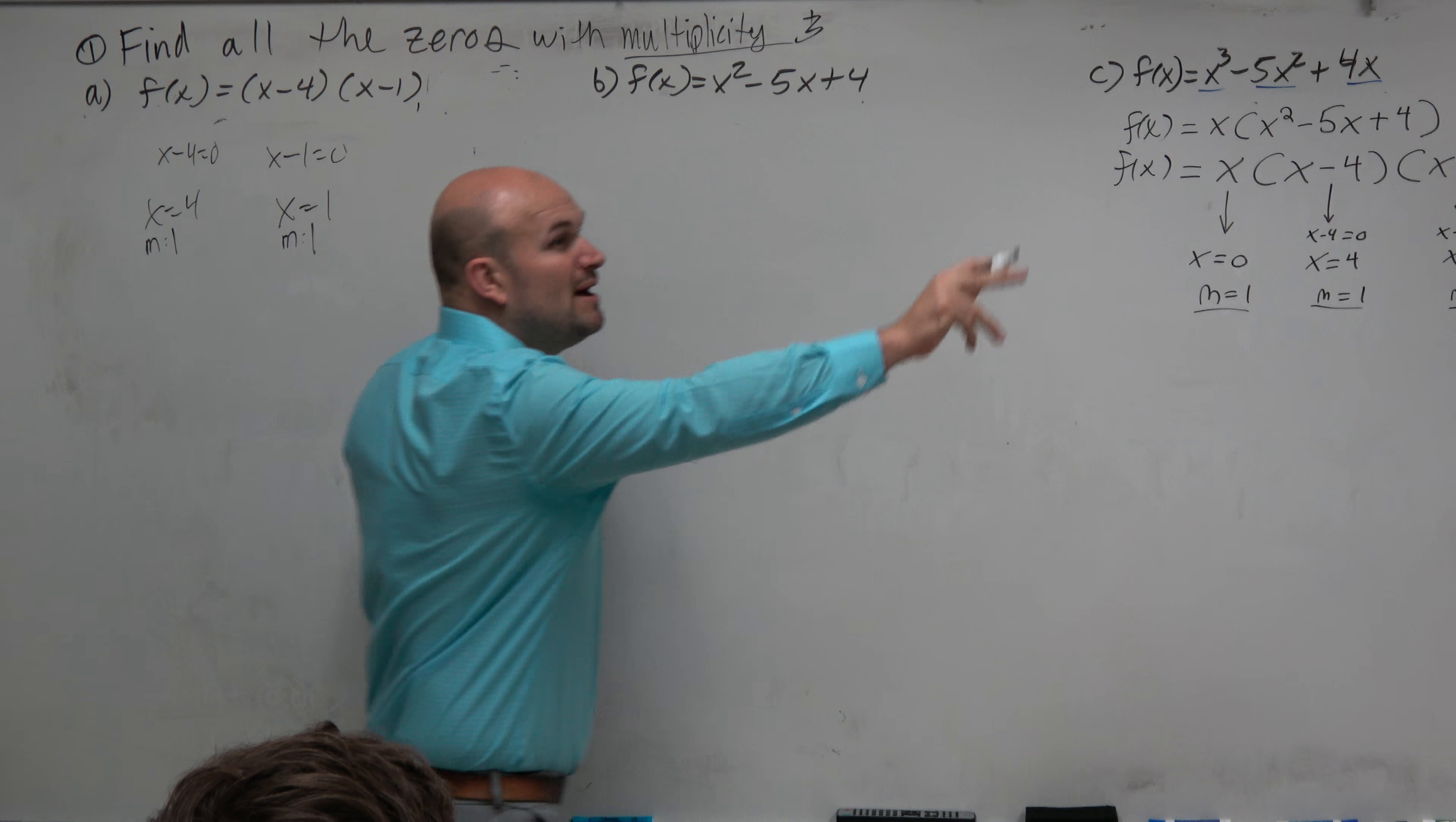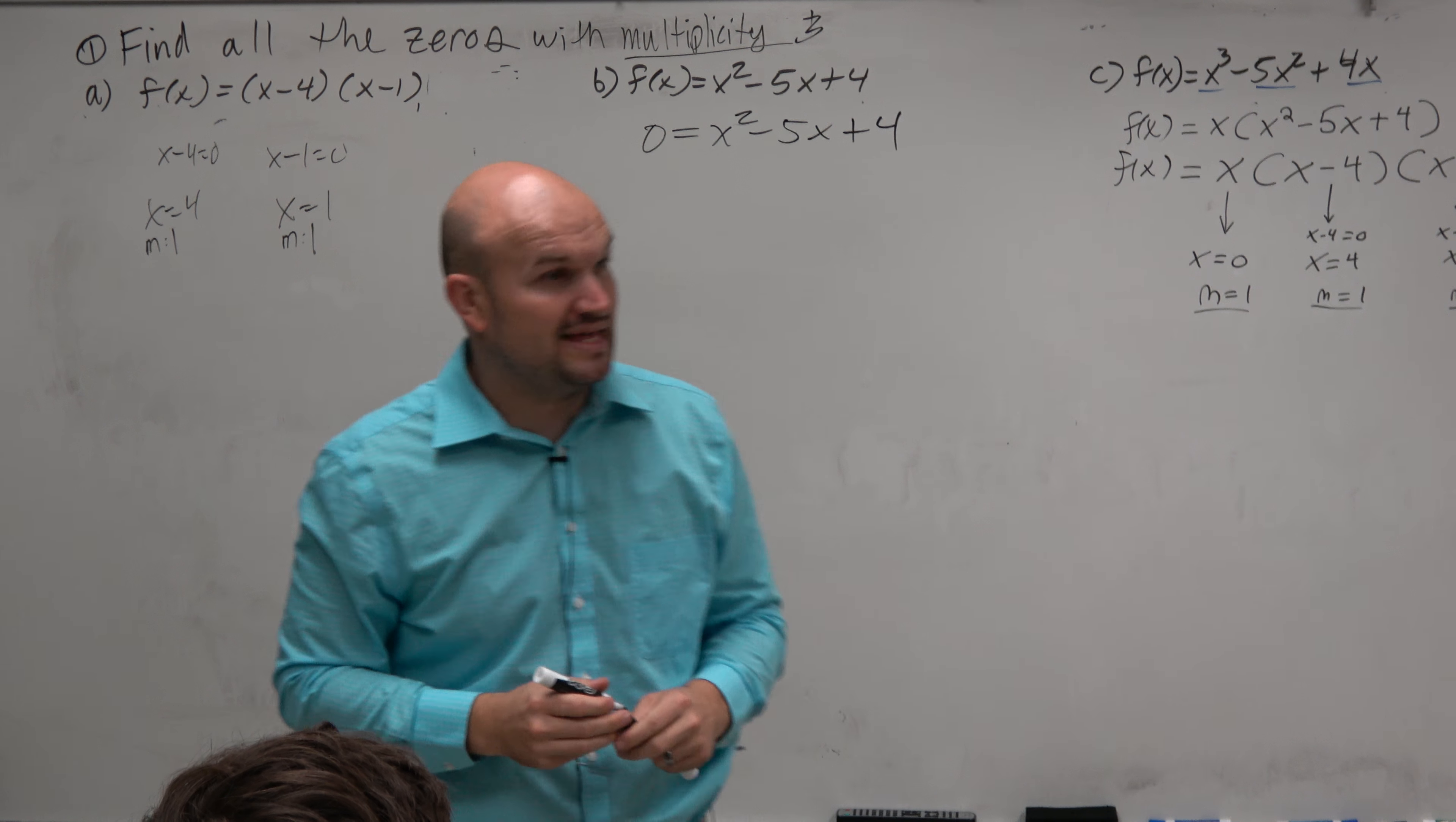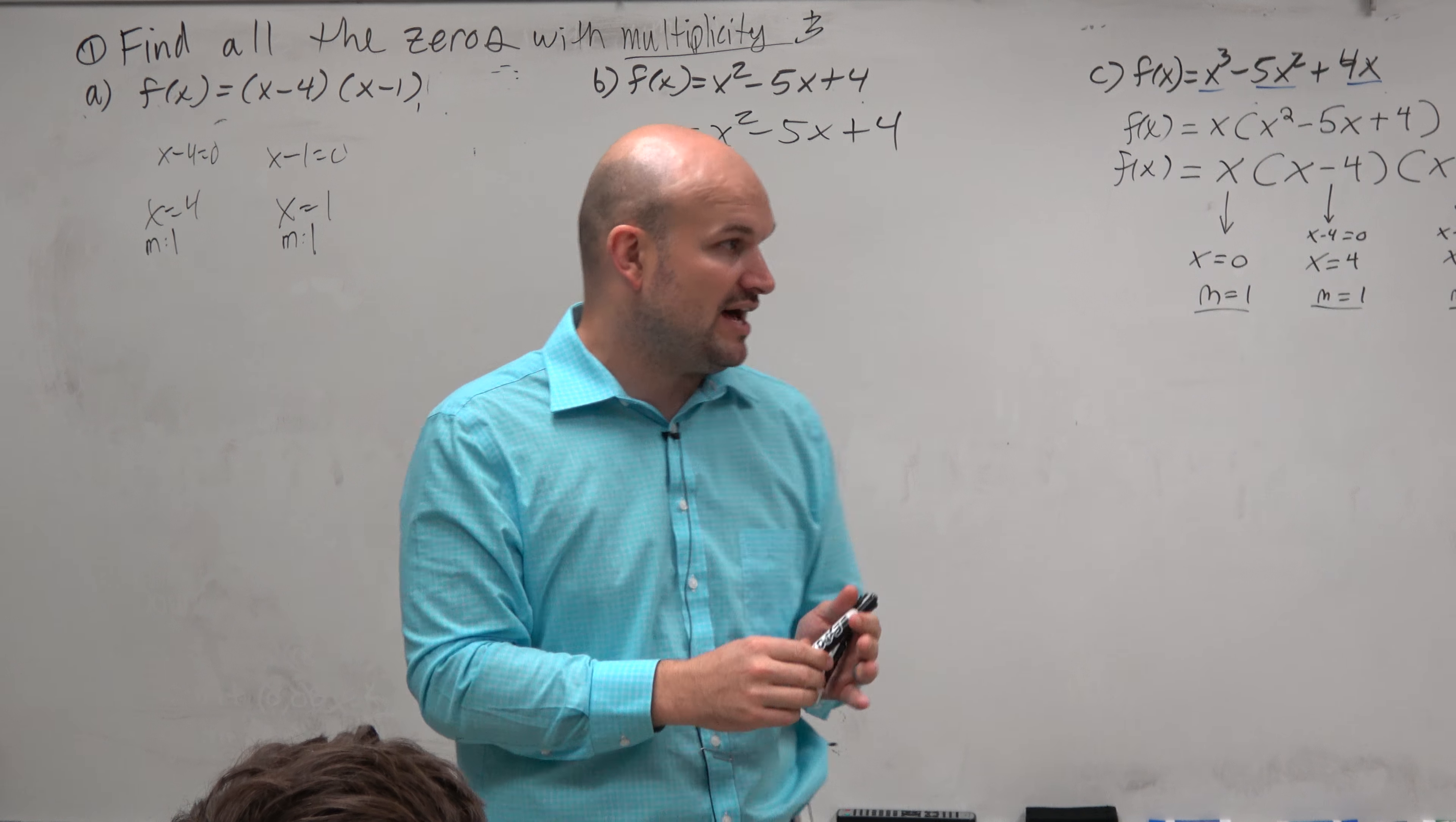So the first thing you should do, if you have no idea what to do, you can at least tell me this. What does that communicate to me? That communicates to me that you understand the definition of finding the zeros. You understand that f of x has to equal 0, and you're trying to find the values of x.